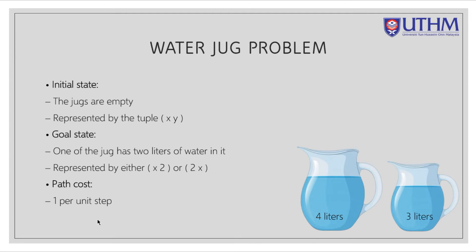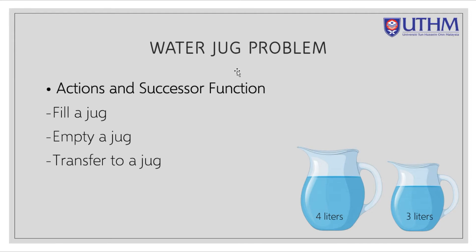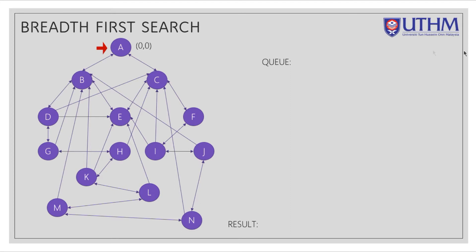Our path cost is 1 per unit step. As a method for using Breadth-First Search, we should understand how we can fill a jug, empty a jug, or transfer between jugs. We can see that node A is in the initial state of the water jug, which is (0,0).